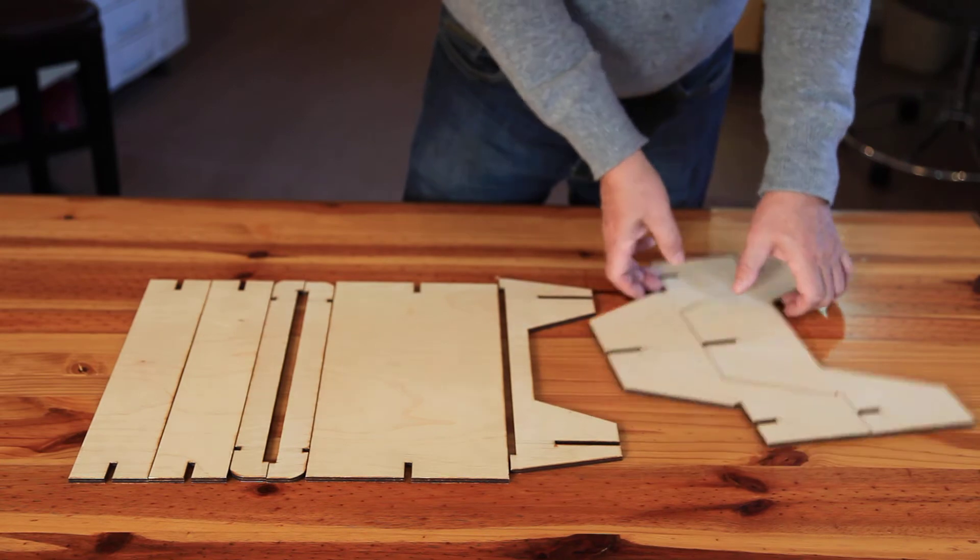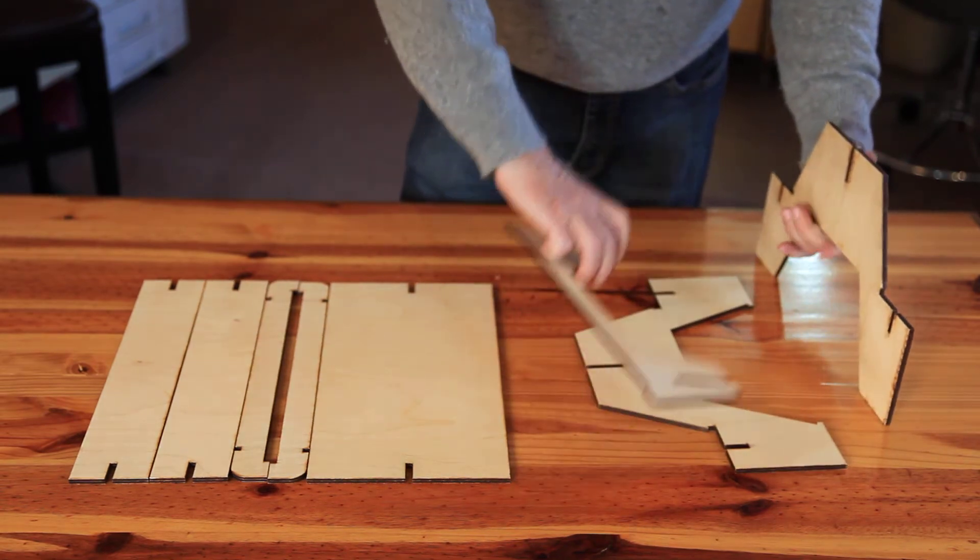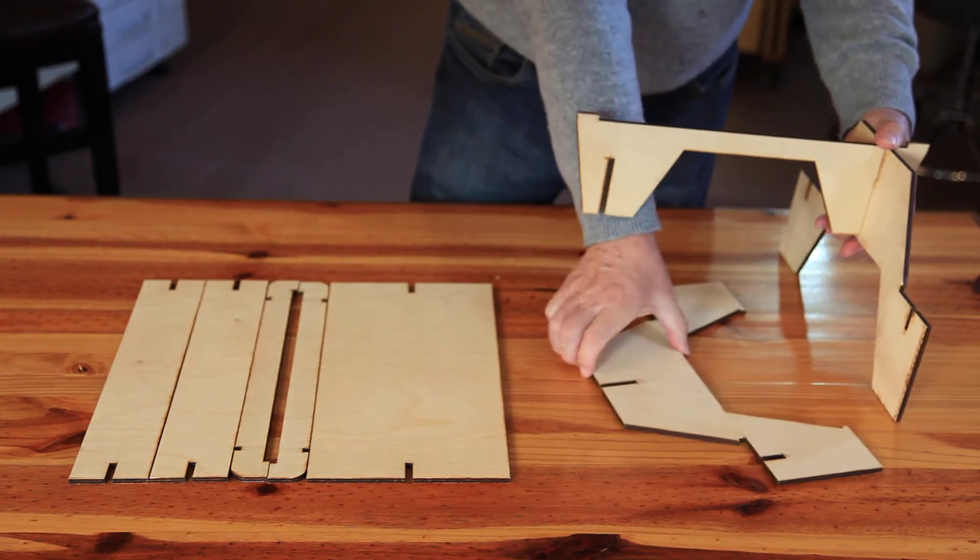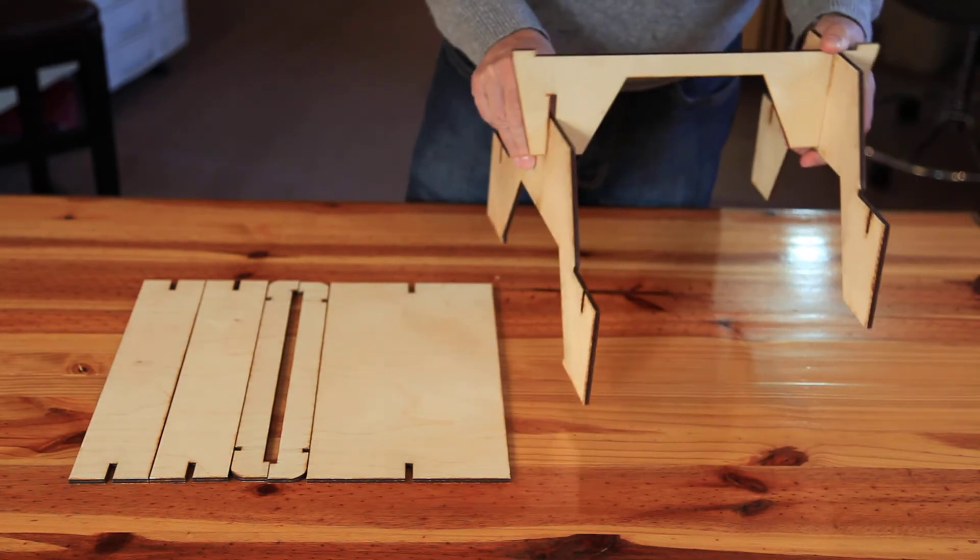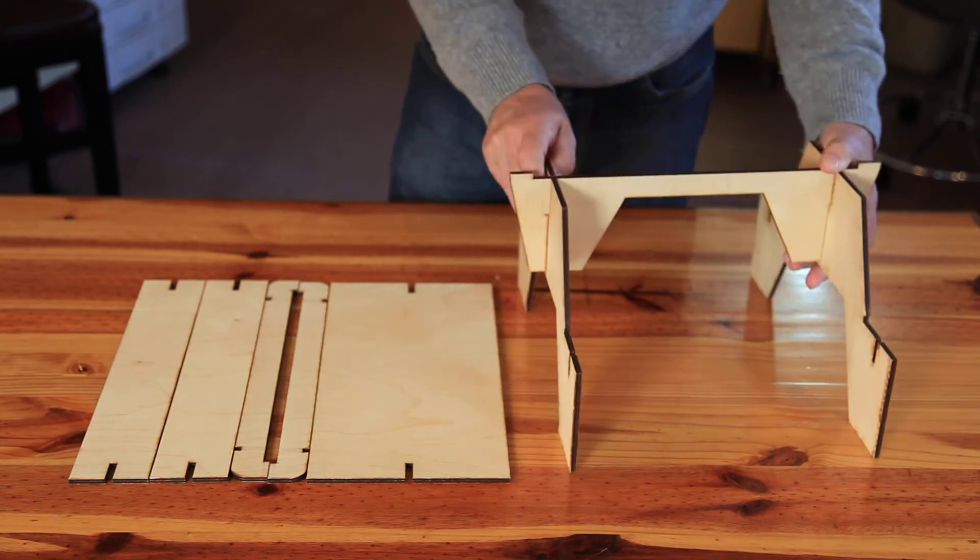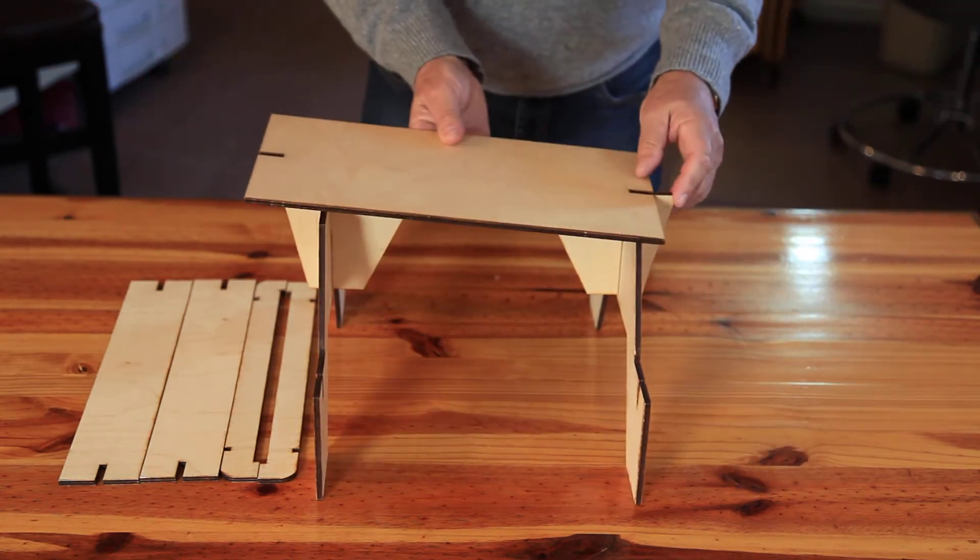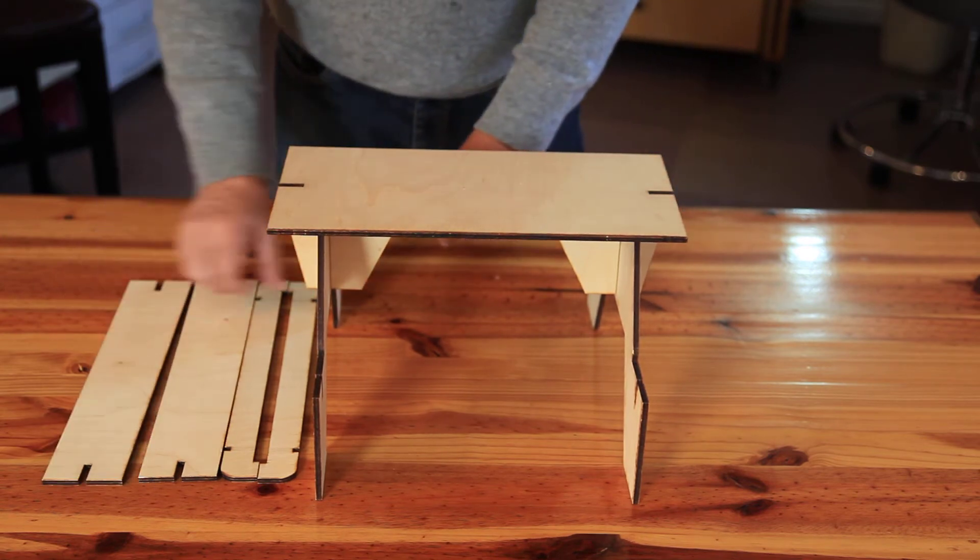So the way it goes together, bring up these two legs, put the tabletop support between the two legs like so, and then drop the tabletop on there.